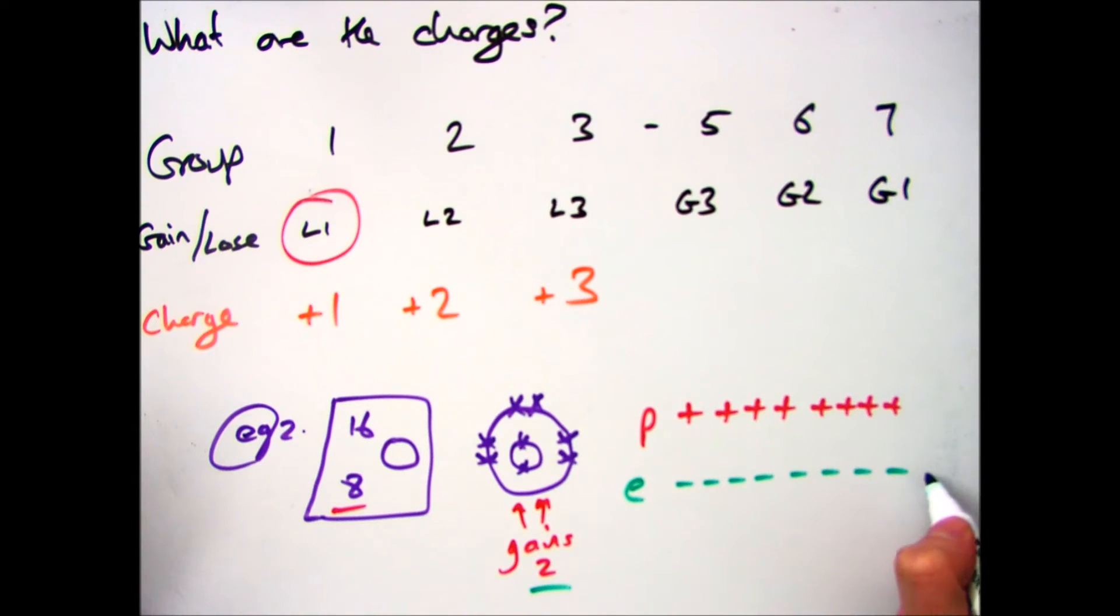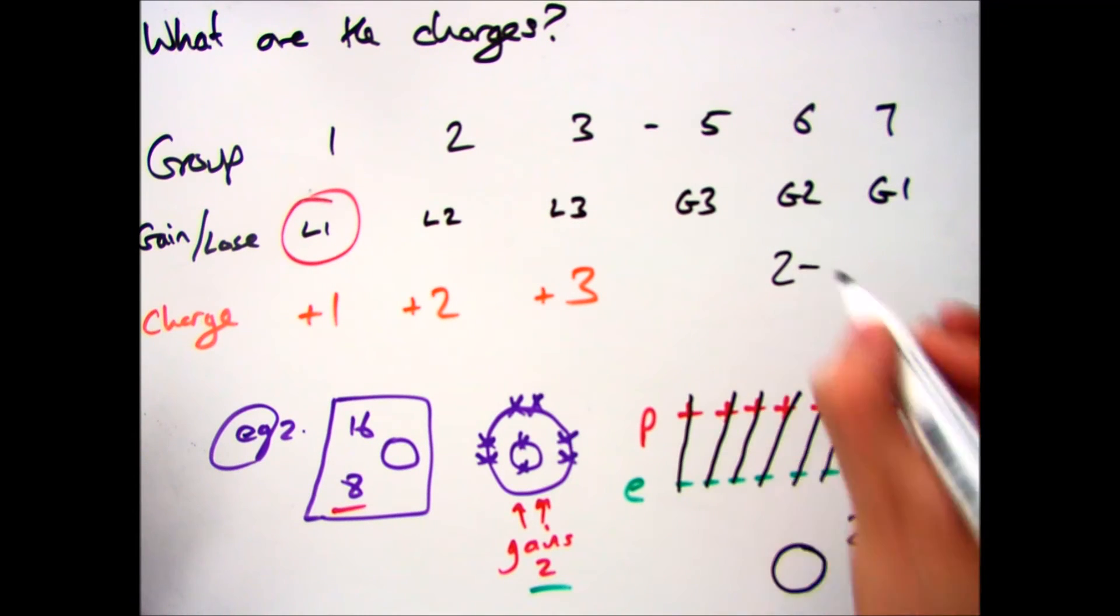And because it's gaining 2 electrons, we have 2 extra negative charges. Again, we do the same we did before. We cancel out the ones that we've got the same number of positives and negatives for. And that leaves me with 2 minuses. So oxygen in group 6 has a charge of 2 minus.